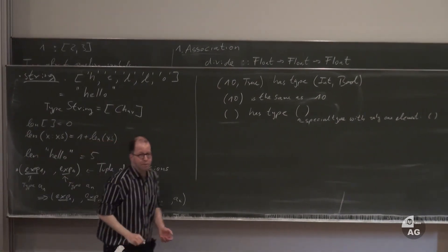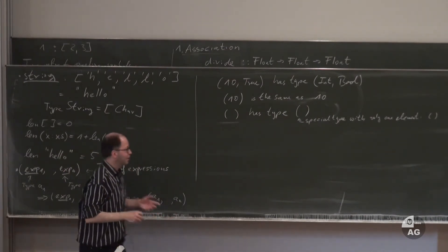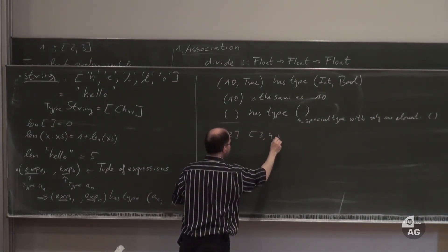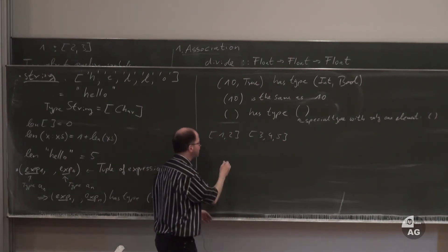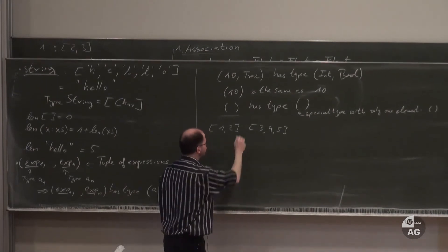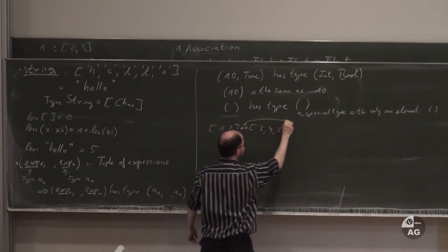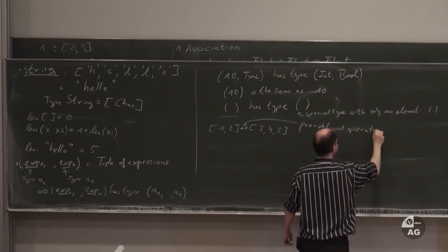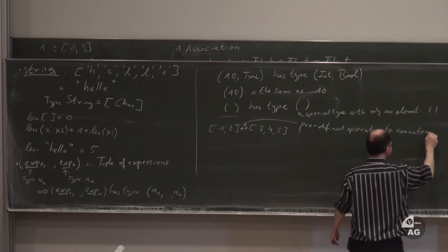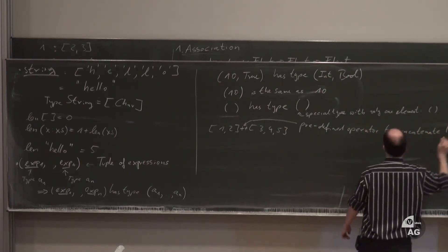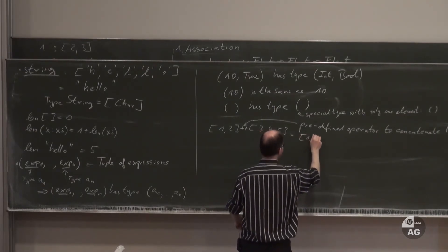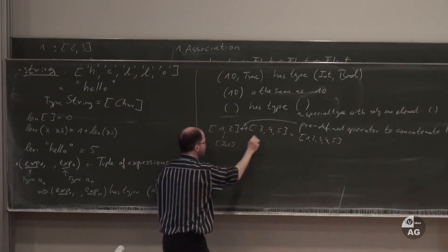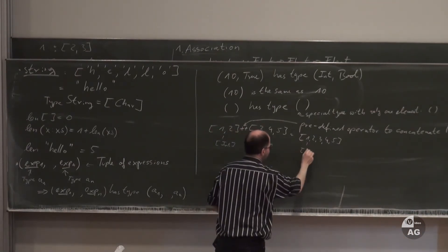You can concatenate two lists using the predefined operator '++'. For example, [1,2,3] ++ [4,5] gives [1,2,3,4,5]. Both lists must have the same type. However, you cannot easily concatenate tuples, because a tuple of two elements and a tuple of three elements have different types. There's no general predefined operation for this; you'd have to write a specific function for each combination.